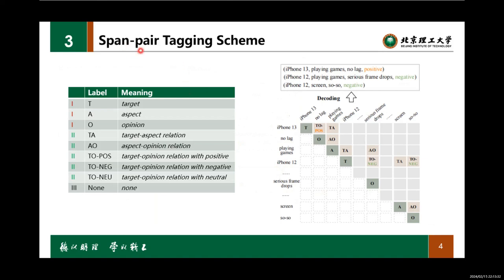We propose a span pair tagging scheme, STS, for the DIA-ASQ task. We use the TA and O labels to denote the target, aspect, and opinion terms. We use TA, AO, and TO labels to denote the three relations between terms. To ensure consistency in the tagging scheme, we attach sentiment labels to the TO label to form TO-positive, TO-negative, and TO-neutral labels.